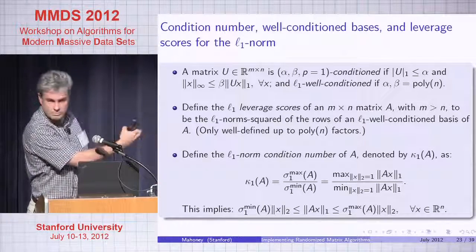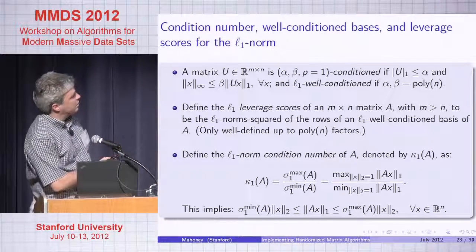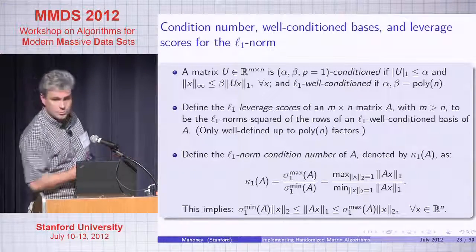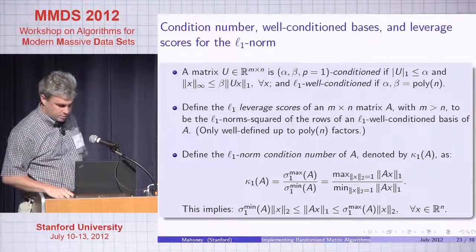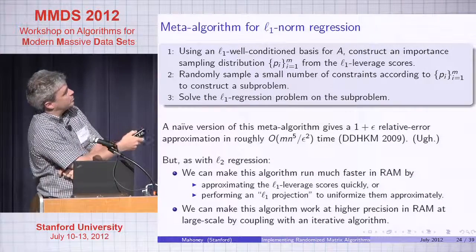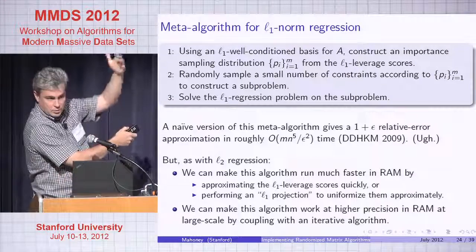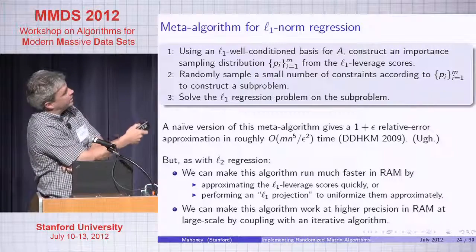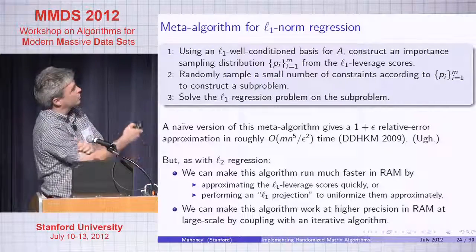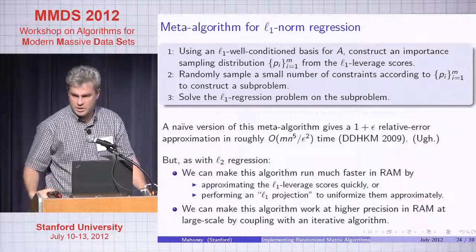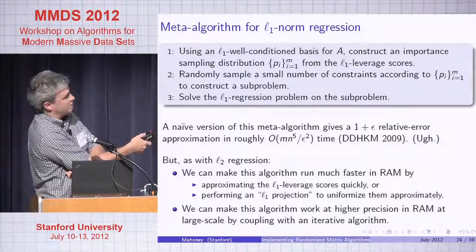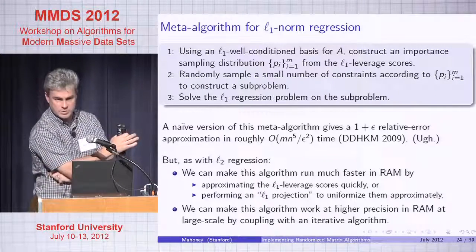These L1 leverage scores are only well-defined up to low-dimensional factors, which means you might need a few more iterations. Define the L1 norm condition number as the obvious extension of the L2 norm condition number — less structure here, but we can define it. Same meta-algorithm: using an L1 well-conditioned basis, construct an importance sampling distribution for the L1 scores, define the coarse non-uniformity structure, randomly sample a small number of constraints, and solve the sub-problem.